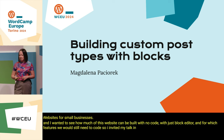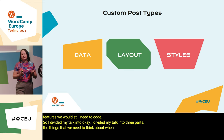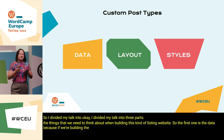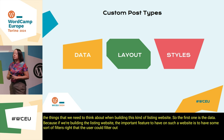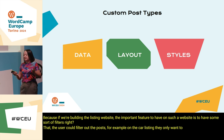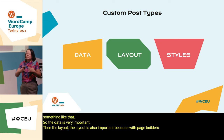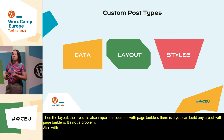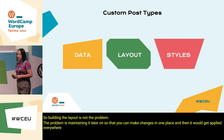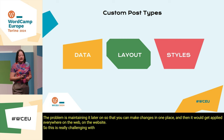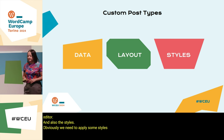I divided my talk into three parts: the things we need to think about when building a listing website. The first is the data — if you're building a listing website, an important feature is some sort of filtering so users can filter posts, for example showing only BMWs. Then the layout, which is important not just to build but to maintain, making changes in one place that apply everywhere. And finally, the styles.